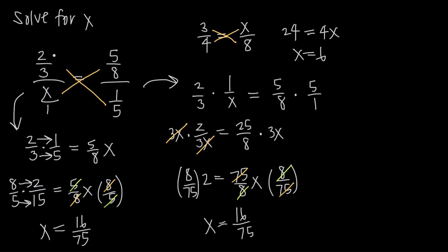You can always just do cross multiplication like a regular proportion problem, or you can do fraction division — turn it into fraction multiplication — and solve for x like you normally would. Either way, that's how you solve a proportion problem when you have fractions inside of fractions.